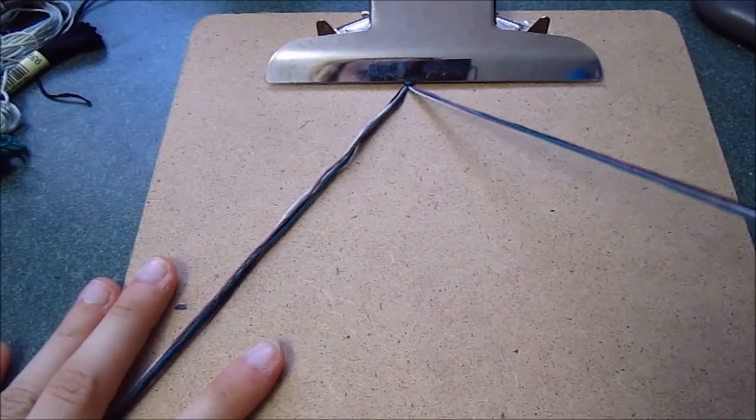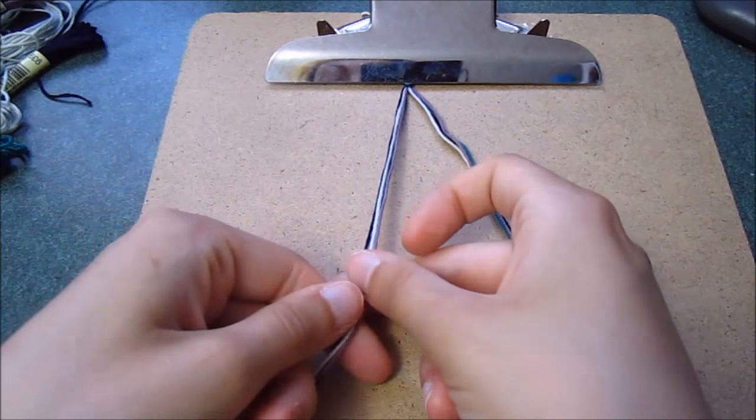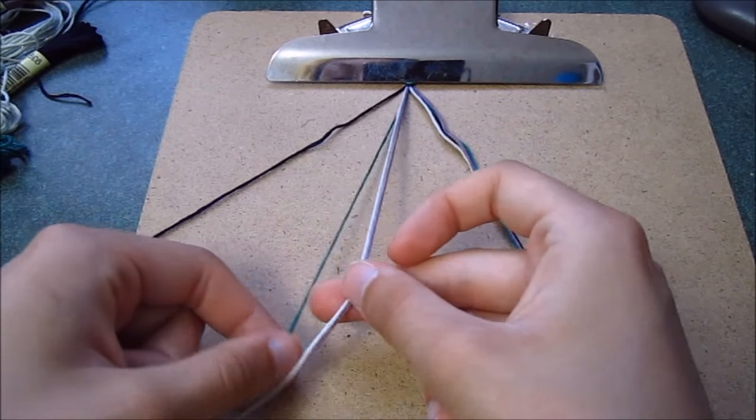From this point, you're going to want to distribute your colors to mirror each other on each side in the order that you would like your colors to appear in your friendship bracelet.